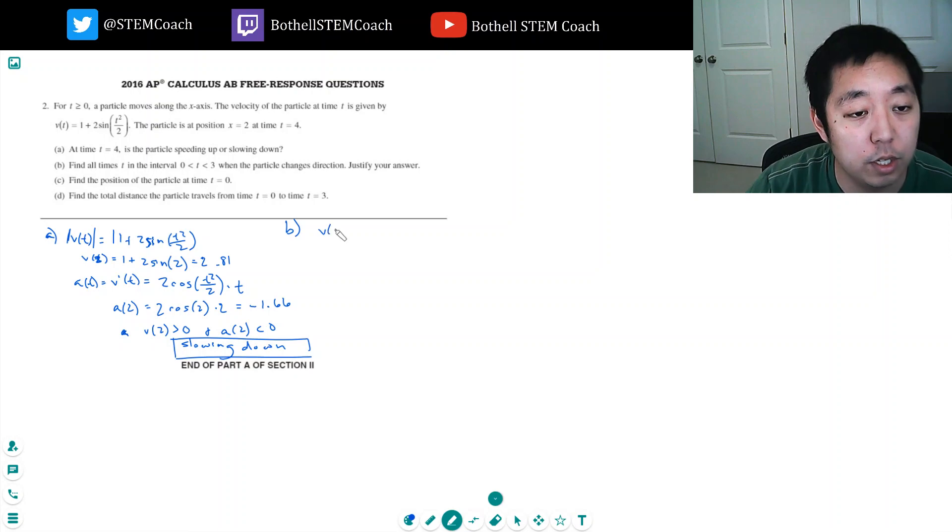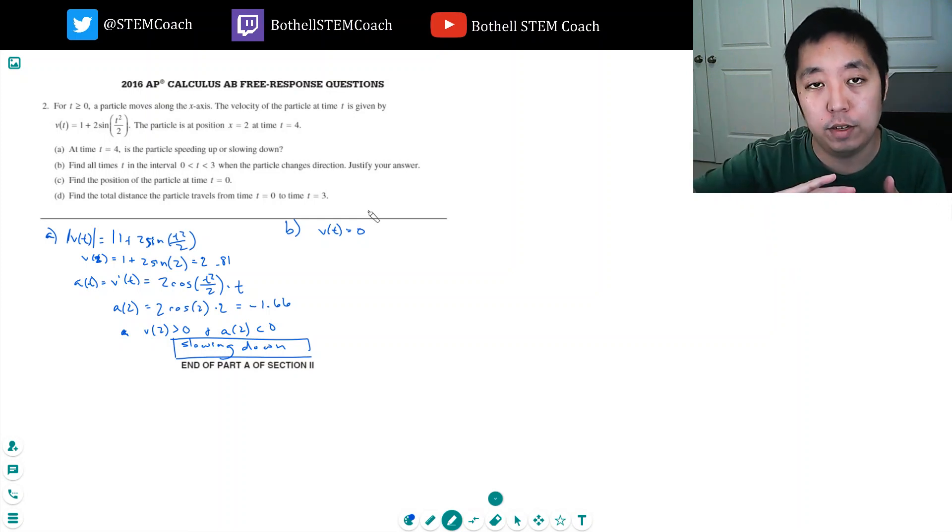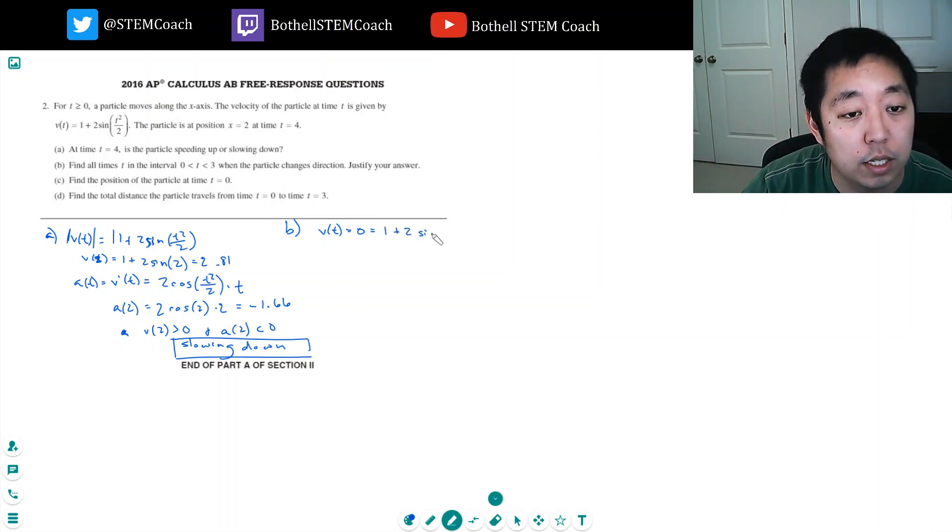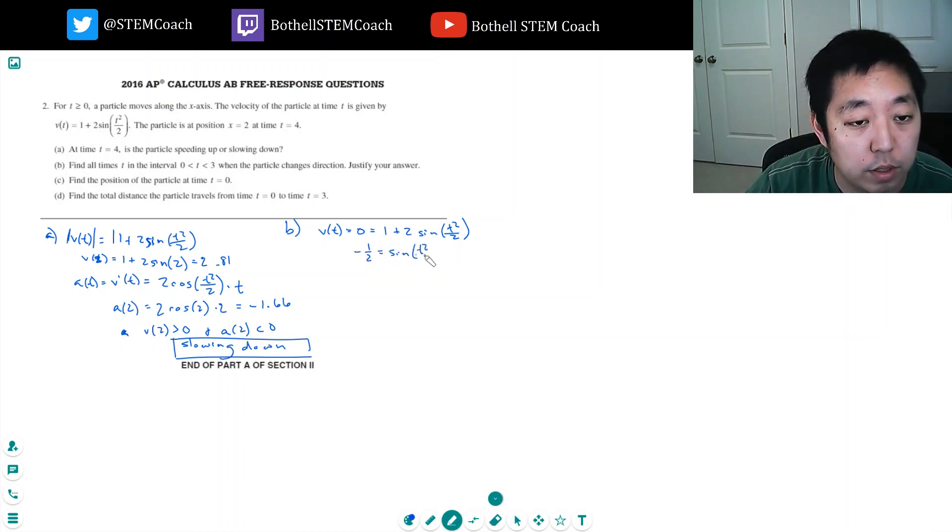So I need to know when v(t) is equal to 0, because that's how I change directions. I have to go through a stopping point. I got to go in the positive direction to the negative direction or negative to positive. So I need to know when the velocity is 0. So 1 plus 2 sine t squared over 2.